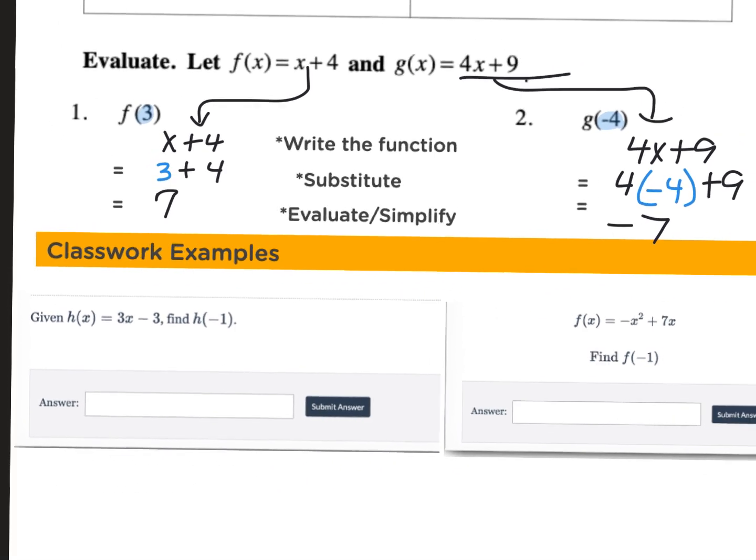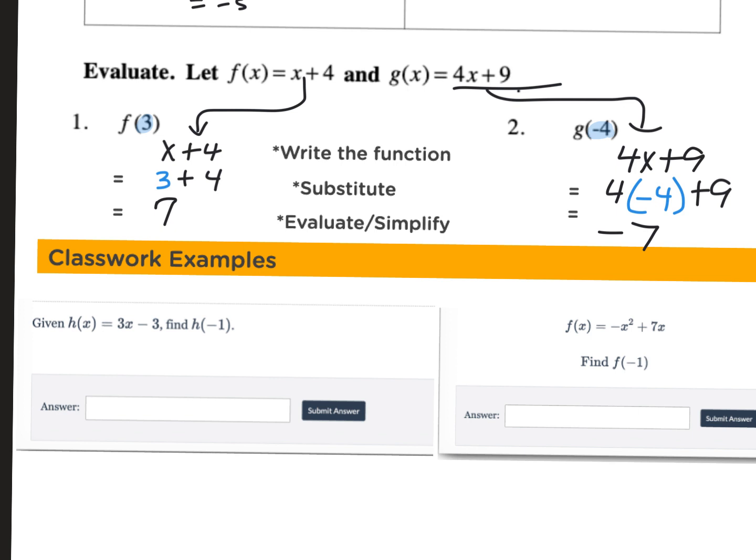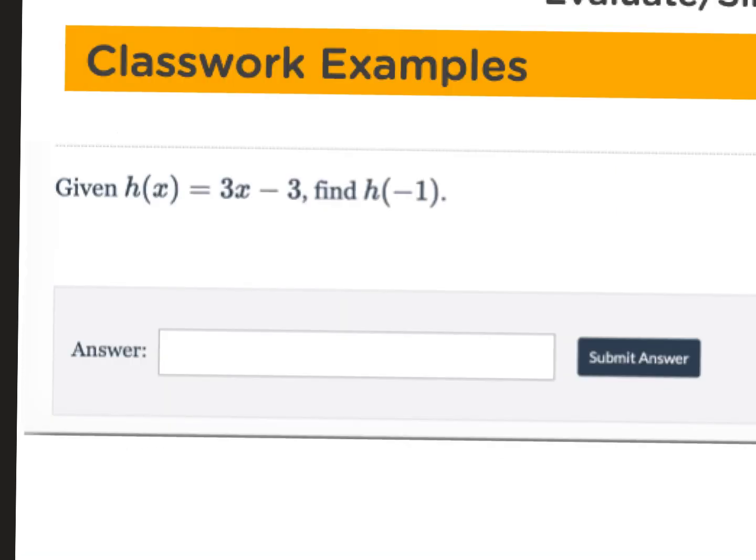I'm going to give you about a minute or two to try those two examples at the bottom, then I'll give you the answer and give you time to do what you need to do. This tells me h of x is 3x minus 3. I'm going to take the x and replace it with a negative 1 because it told me to replace the x with negative 1. We know we're going to multiply, so 3 times negative 1 is negative 3. Negative 3 minus 3 means I'll type negative 6 into that answer box.